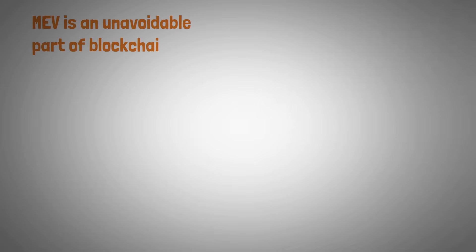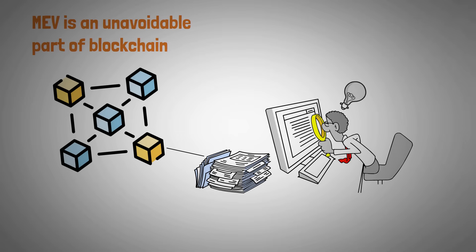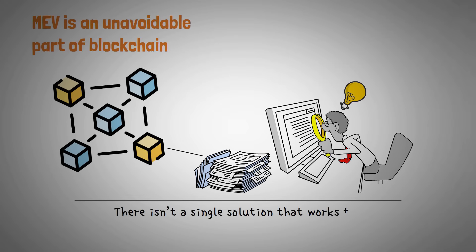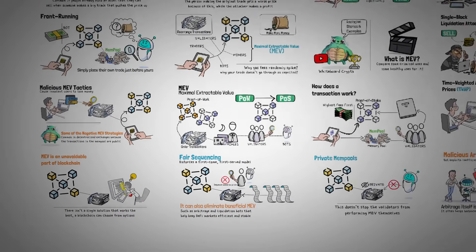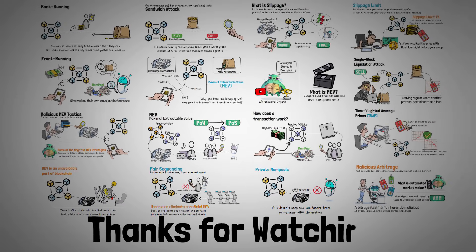Wrapping this up, at its core, MEV is an unavoidable part of blockchain design because every transaction is visible on the blockchain, but understanding it can help you navigate the space more wisely. There's not really a single solution that works the best, but different blockchains have different proposed solutions. So when you're deciding what ecosystem you want to use, taking a look at their MEV solutions might help you make a better choice. And if you're just a user of blockchains, you should know there's a ton of really smart developers fighting on your behalf. Thanks for watching this video — I hope you enjoyed it, I hope you've learned something, and I hope to see you in our next video.